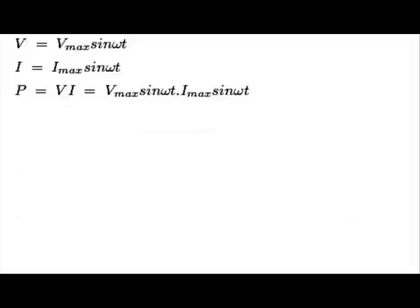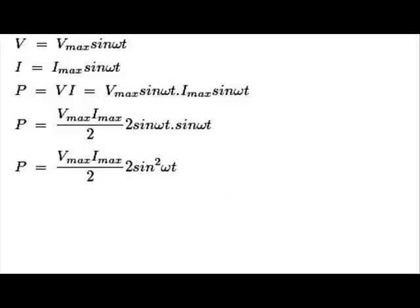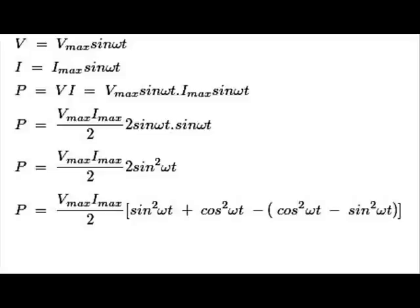This may be rewritten as P = (Vmax·Imax)/2 × (1 − cos(2ωt)), using the identity for sin²(ωt). This is the power waveform expression.